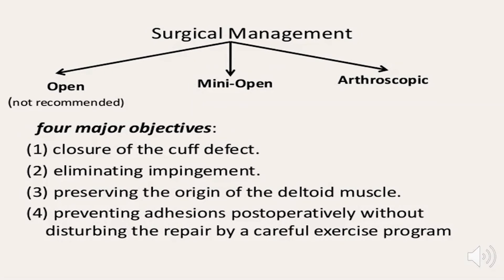There are four objectives stated by Neer for rotator cuff repair: closure of the cuff defect, eliminating the impingement, preserving the origin of the deltoid muscle, and preventing adhesions through a physiotherapy program afterward.